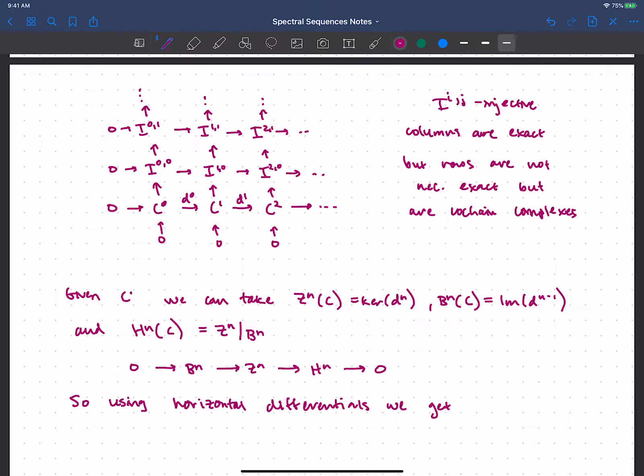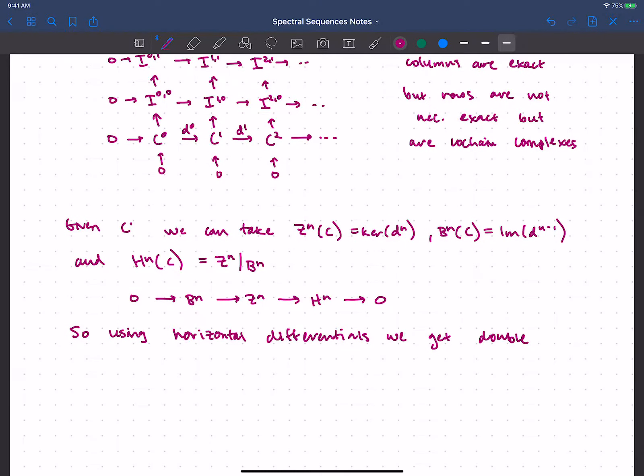So using these horizontal differentials, not just in C, but in this big double complex, we can get a new double complex. In fact, we can get several. So we get double complexes where we just take the coboundaries at each place. We could take the cocycles at each place. Or we could take the homology, cohomology, I suppose, at each place. And so we get these other double complexes from this double complex.